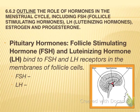Luteinizing hormone promotes the completion of meiosis by the oocyte. When a woman is born, her eggs are immature and haven't completed meiosis, so LH comes into play to complete that process prior to ovulation. LH also partially digests the follicle wall of the secondary follicle, allowing it to burst open and cause ovulation. Finally, LH causes the growth of the corpus luteum, which secretes estrogen and progesterone. LH rises until estrogen and progesterone production is established, then changes.